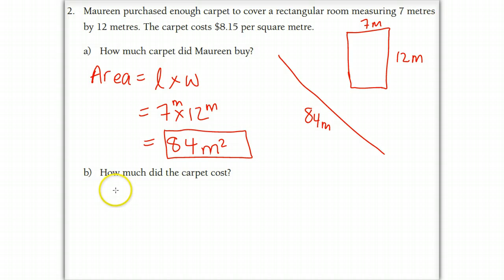Okay how much did the carpet cost? Well we're told that the unit rate for it is $8.15 per meter and when we're calculating things like this we can take the unit rate and multiply it by the amount, in this case 84 meters squared.